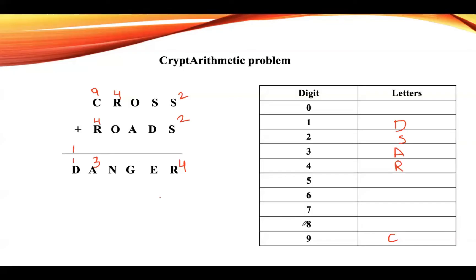If we take O as eight, eight plus four produces a carry, but we have not considered any carry here — after adding these two values, we should not get any carry. If we take O as seven, seven plus four also produces carry giving eleven. If O is six, four plus six again produces carry. If O is five, five plus four is nine, but nine is already assigned. Four, three, two, and one are already assigned, so we cannot assign any value to O.